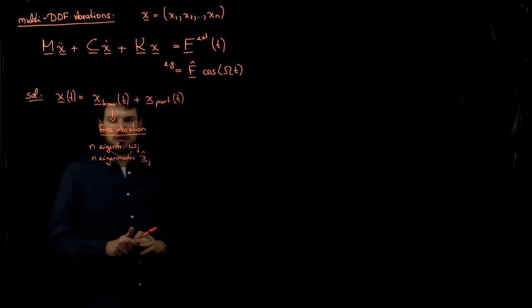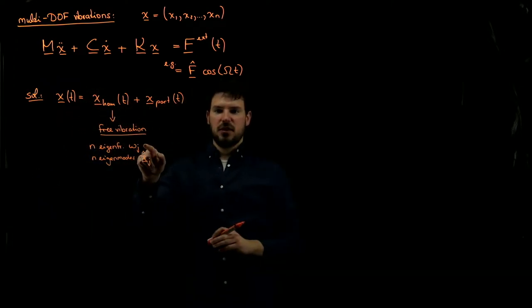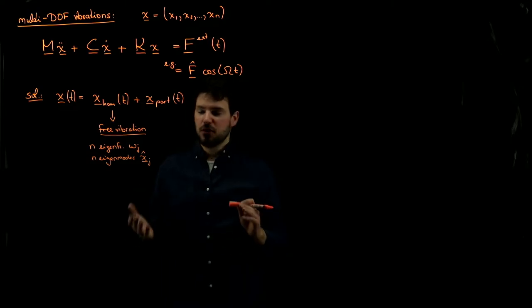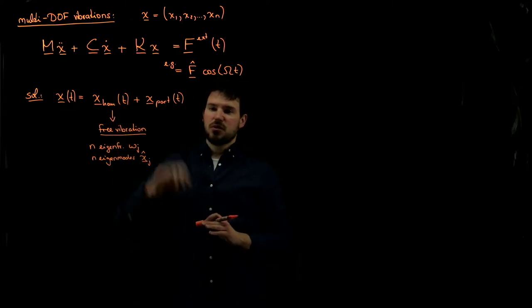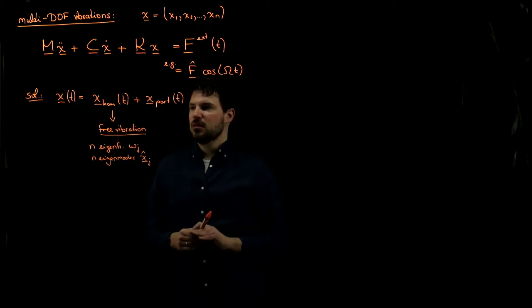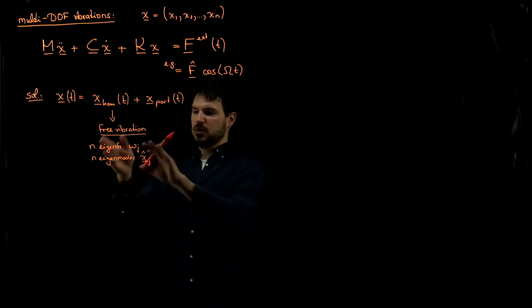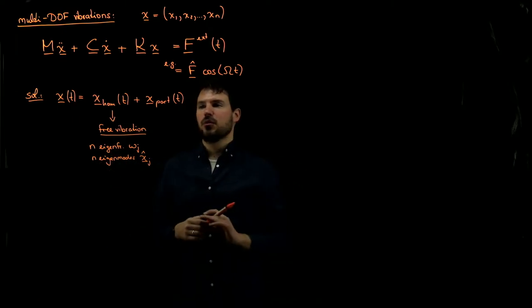And then we have to consider the special case that if there's a zero eigenfrequency that was associated not with a real vibration, but with a rigid body mode that we saw in the eigenmode as well. This was the free vibration that we discussed previously, and what we have to do here is solve an eigenvalue problem and obtain these guys, and then we know how the system vibrates.